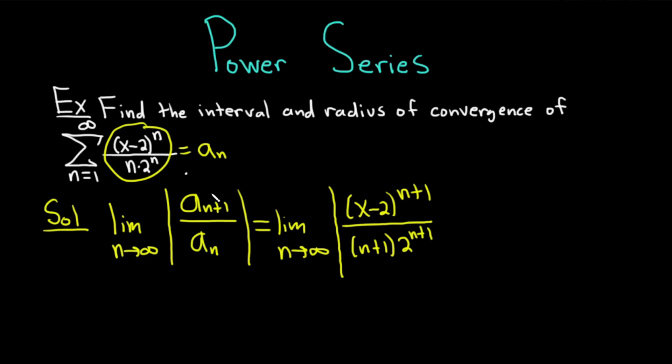Now we have to divide by a sub n. Instead of dividing, we multiply by the reciprocal. So it'll be times n times 2 to the n over x minus 2 to the n.